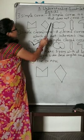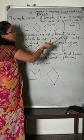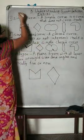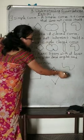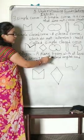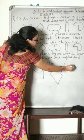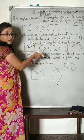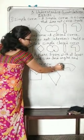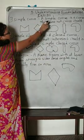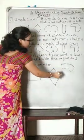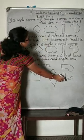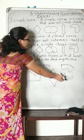First, we will see the simple curve. A simple curve is a curve that does not cross itself. Suppose one curve like this open figure — this is a curve, we consider it an open curve. But when we close it, that is called a closed curve. A simple curve means it does not cross itself. Suppose I draw a curve and join it in a way that it crosses — that means it is crossing itself, so it cannot be a simple curve.